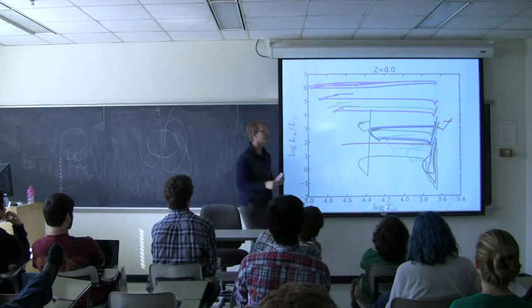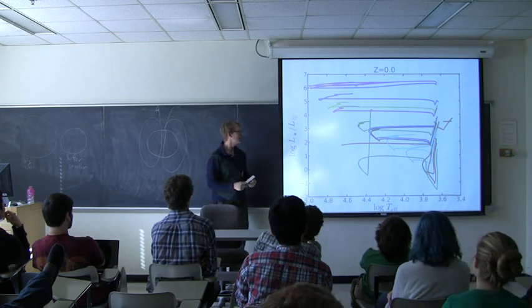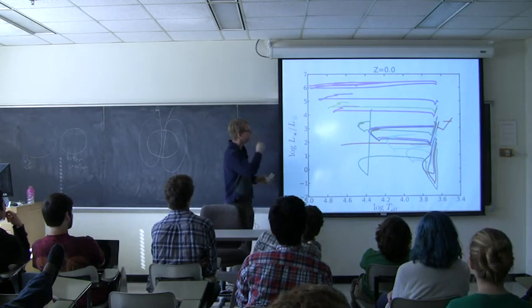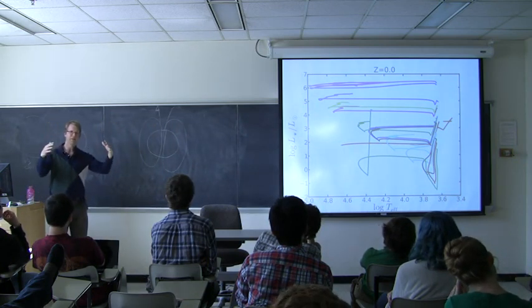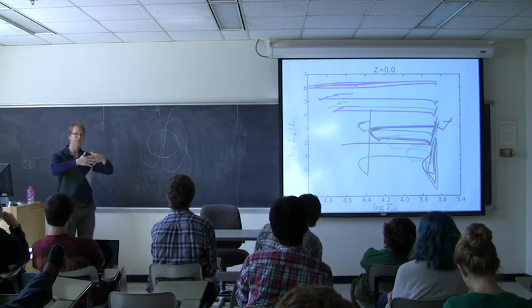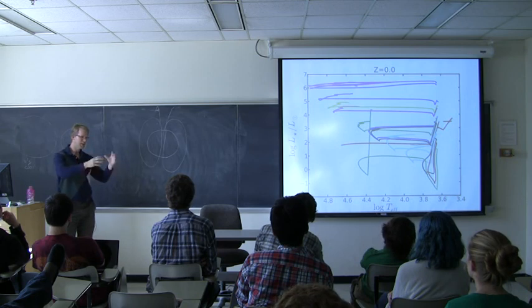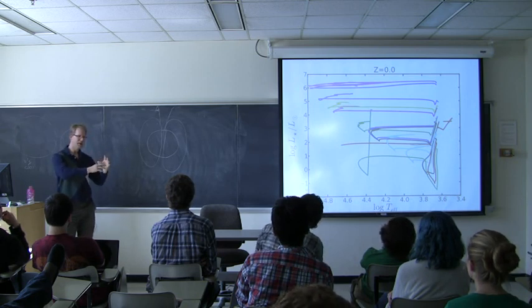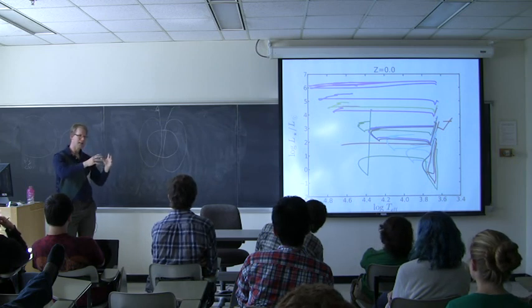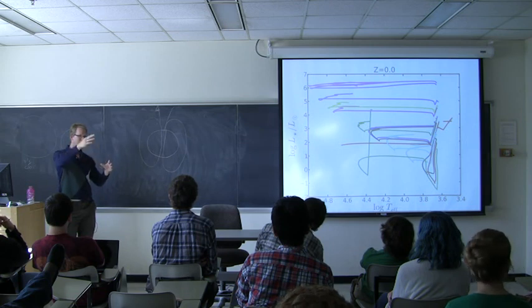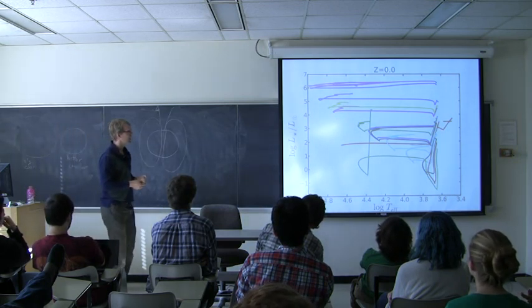And it turns out that that's true. That's what you would expect. Z equals zero corresponds to like the first stars that would ever form in the universe, because there were no heavier metals that had been built in stars yet. And so the very first stars would burn hotter. It's not a complicated explanation, but it's not entirely simple. When you put metals in the atmosphere of a star, the metals absorb photons a lot, so they make the atmosphere more opaque.